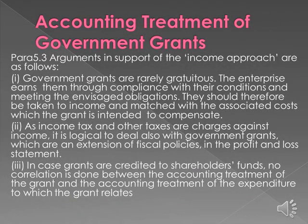Para 5.3: Arguments in support of the income approach are as follows. (1) Government grants are rarely gratuitous; the enterprise earns them through compliance with their conditions and meeting the envisaged obligations. They should therefore be taken to income and matched with the associated costs which the grant is intended to compensate. (2) As income tax and other taxes are charges against income, it is logical to deal also with government grants, which are an extension of fiscal policies, in the profit and loss statement. (3) In case grants are credited to shareholders' funds, no correlation is done between the accounting treatment of the grant and the accounting treatment of the expenditure to which the grant relates.